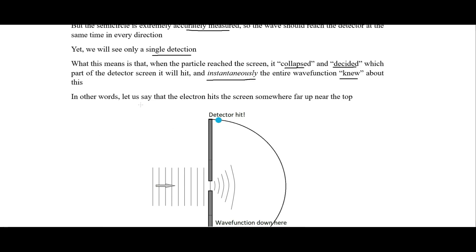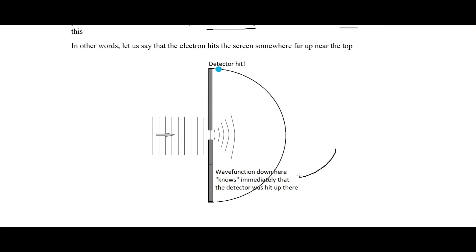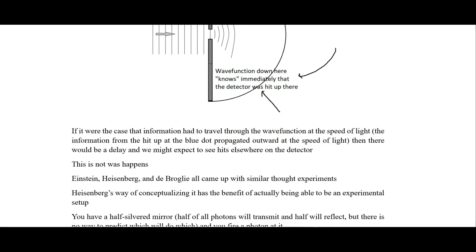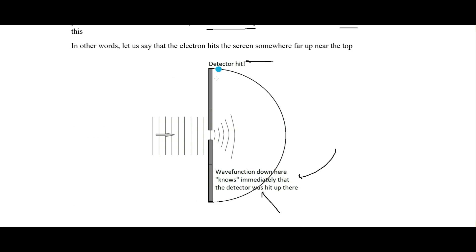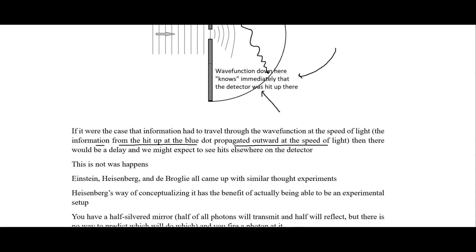Let's say the electron hits the screen somewhere far up near the top — at this blue part right here. Then the wave function down here knows immediately — instantaneously — that the detector was hit up here, and so it knows not to also show a detection down there. If information had to travel through the wave function at the speed of light, then there would be a delay, and we might expect to see it hit elsewhere from the same particle on the detector, but this is not what happens.